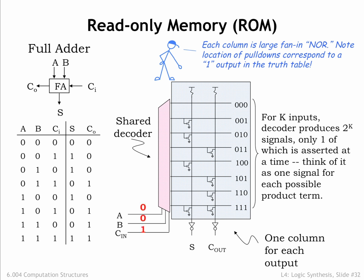For example, if the inputs are 001, the decoder output labeled 001 will be high. This will turn on the circled pull-down switch, forcing the S vertical column low.